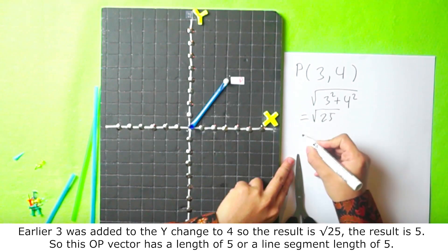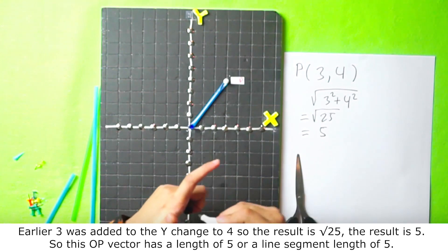The result is 5. So this OP vector has a length of 5 or a line segment length of 5.